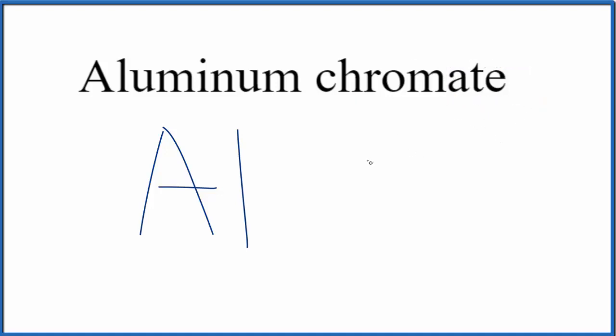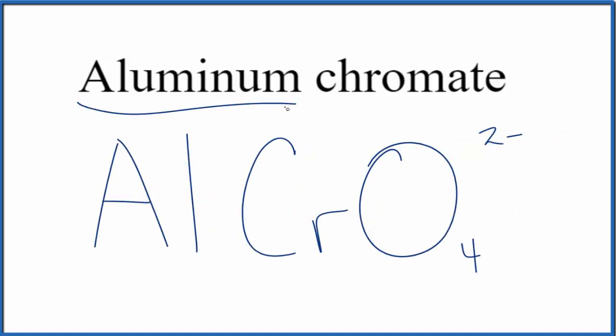You either memorize that the chromate ion is CrO4 and the whole thing has an ionic charge of 2 minus, or if you're allowed, you look this up on a table of polyatomic ions. Since aluminum is a metal and chromate is a polyatomic ion, we consider this an ionic compound. We need to make the charges balance.